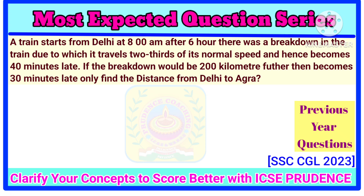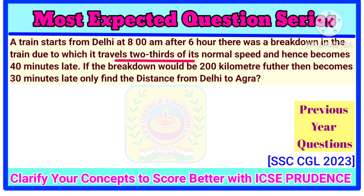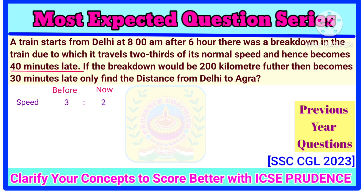Students, there is nothing to get worried about because here we are going to share the easiest trick. By using it, you can solve this kind of question within seconds. A train starts from Delhi at 8am; after 6 hours it had already travelled. There was a breakdown in the train, due to which it travels at 2/3 of its normal speed. So previously it was travelling at a speed of 3 units, now 2. That means the ratio of speed is 3 to 2, and hence it becomes 40 minutes late.